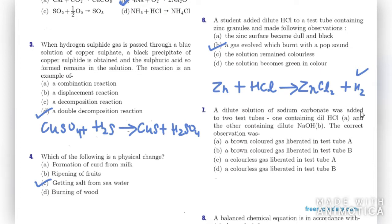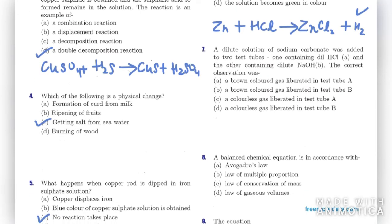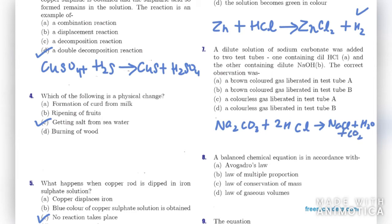Question seven: dilute sodium carbonate was added to two test tubes — one with dilute HCl and one with dilute NaOH. Na2CO3 + 2HCl gives NaCl, H2O, and CO2. When sodium carbonate reacts with a base like NaOH, there is no reaction. The correct observation is C: a colorless gas liberated in test tube A only, since no gas is produced in the second tube.